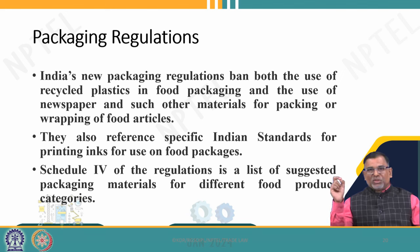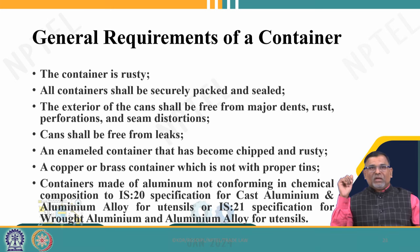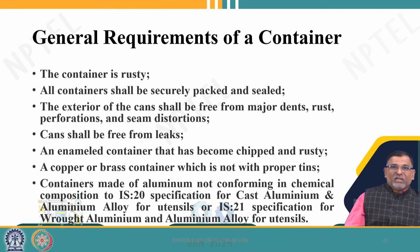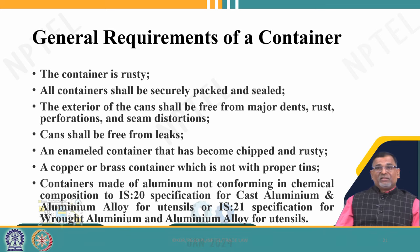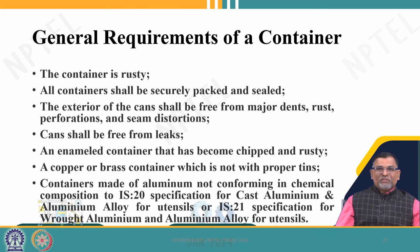There are also Indian standards for printing inks used in food packages, and regulations for different food products — the same packaging cannot be used for different food products, as mentioned under Schedule 4. For example, the standard of a food container specifies that all containers shall be securely packed and sealed, the exterior of cans shall be free from major dents, rust, perforation, and seam distortions. Enameled containers that have become chipped and rusty, or copper/brass containers not with proper tints, are prohibited. Containers made of aluminium not conforming to IS 20 and 21 chemical composition standards are also not permitted.